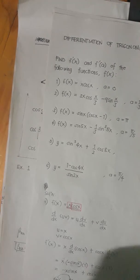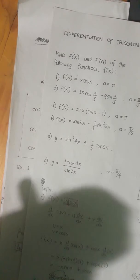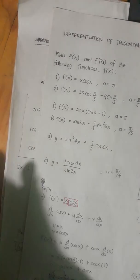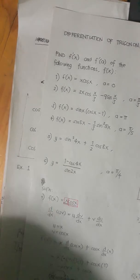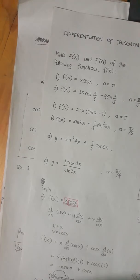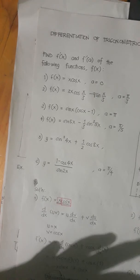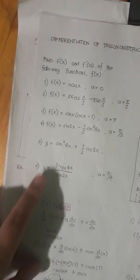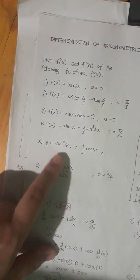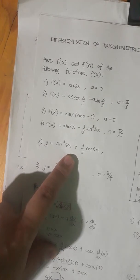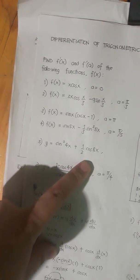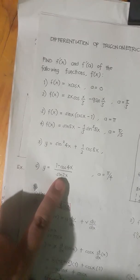Let's have the next function, number 5: y equals sine squared of 4x plus 1 half of cosine of 8x. There is one approach when you don't directly get the derivative — you could first simplify the given function itself before you get the derivative.